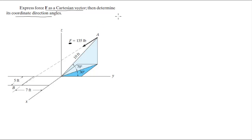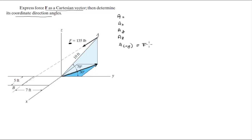First, we're going to find the position vector of A. It has an X component, a Y component, and a Z component. To find this position vector, we first need to find the projection it's making in the X and Y plane. We're going to find this vector so we can get the X and the Y. That is given by F times the cosine of 70°, and you get that this is equal to 3.42.